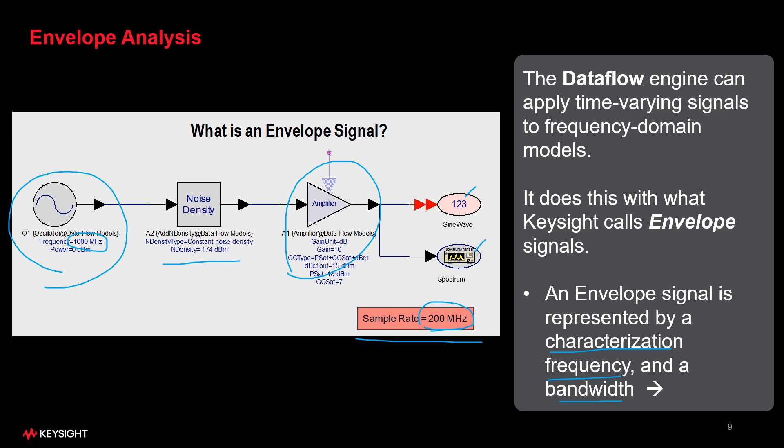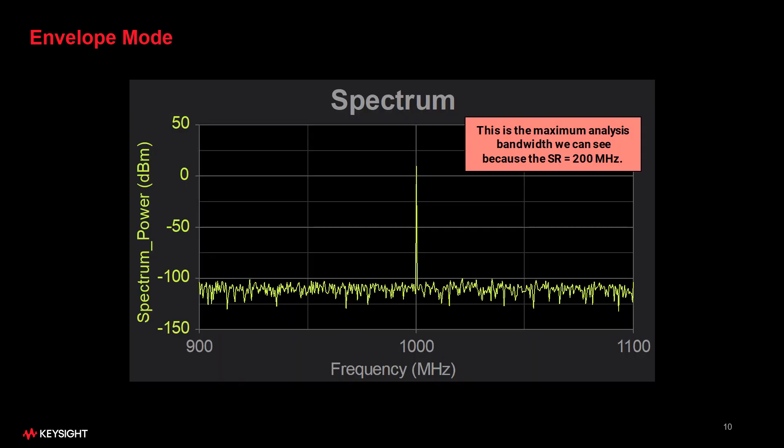The output of this analysis is this spectrum of the 1000 MHz signal, and notice how we can see everything from 900 to 1100 MHz. That's a total of 200 MHz, which is the same as our sample rate.